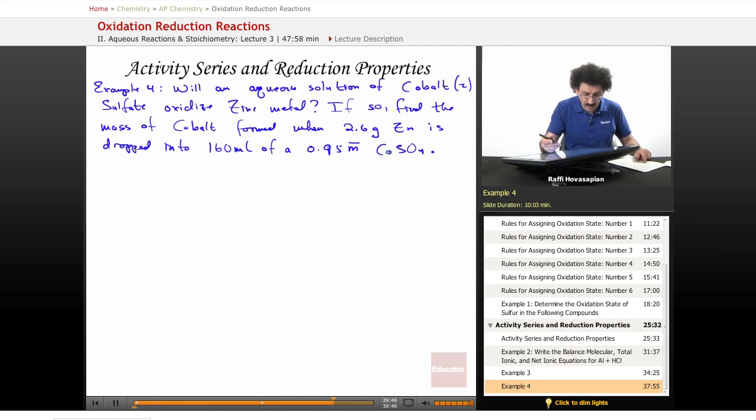Okay, well, if I look on the activity series or the reduction potential, cobalt is below zinc on the activity series. It's higher than zinc on the reduction potential, which means it has a higher reduction potential than zinc. So, yes, cobalt will oxidize zinc. So, let's go ahead and write it out.